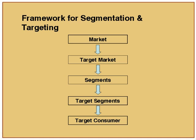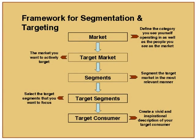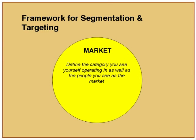The framework: there is a big market. You select a smaller chunk of the market — that is target market. Identify the different segments in the market and then select again a smaller segment — that is target segment. The market is the category you see yourself operating in. Target market is the small chunk of the market in which you actively target. Segments are small parts of the target market which are relevant to you. Out of these small chunks, you choose one segment and then you define a customer.